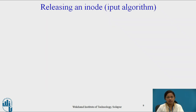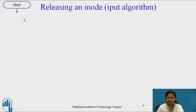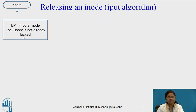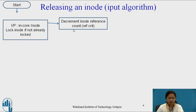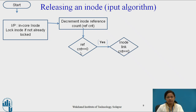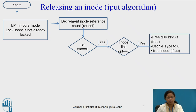Now let us see how the kernel releases an i-node using the iPUT algorithm. The iPUT algorithm is used to release an in-core i-node. The input to this algorithm is the in-core i-node. Lock that i-node if it is not already locked, then decrement the i-node reference count. If the reference count equals 0, check whether the i-node link count is 0. If yes, free that disk block using algorithm free, set file type to 0, and free the i-node using algorithm ifree.